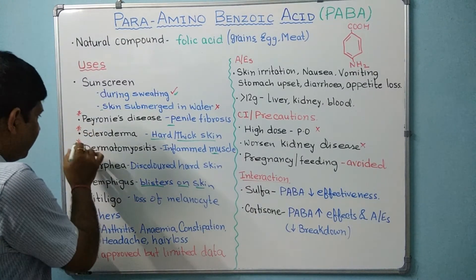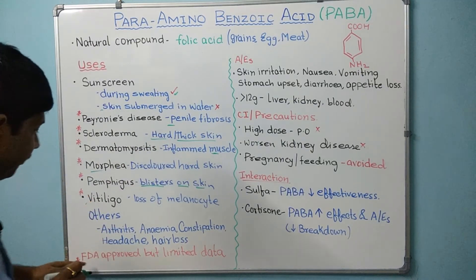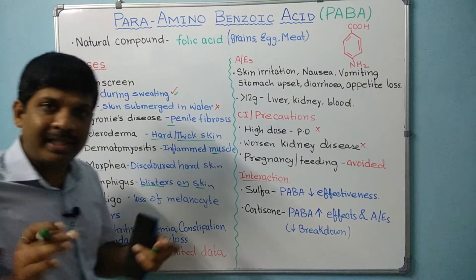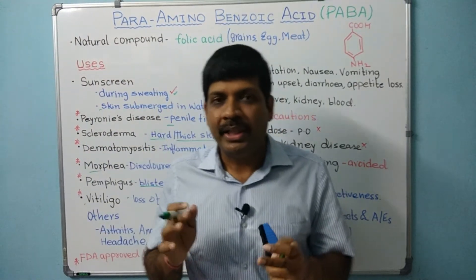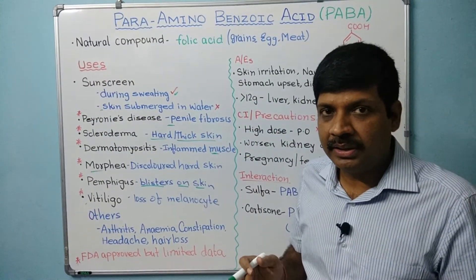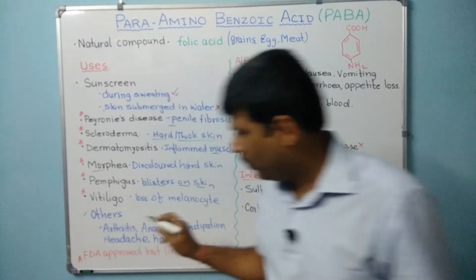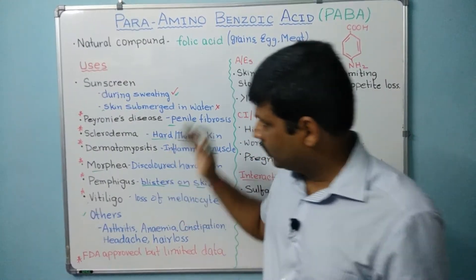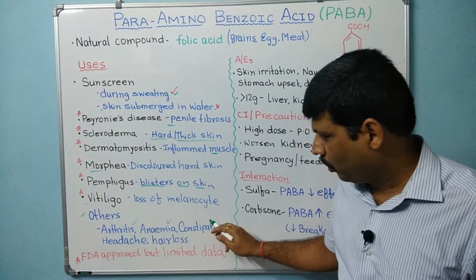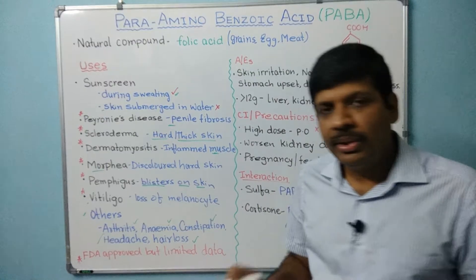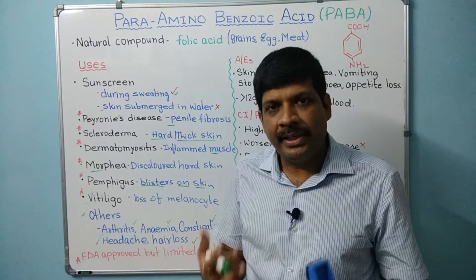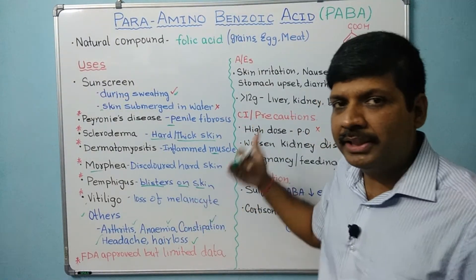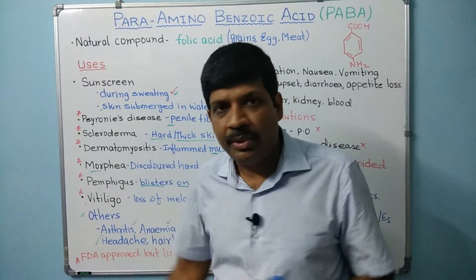The star I have put against these uses means FDA has approved para-aminobenzoic acid for these conditions, but there is still very limited data to support their use. There are other uses — such as arthritis, anemia, constipation, headache, and hair loss — for which there is very scarce or no data on effectiveness. Many more research studies and clinical trials are needed before approval for use in these conditions can be obtained.